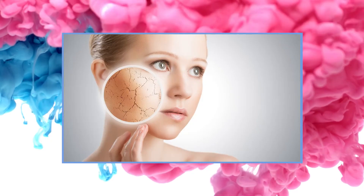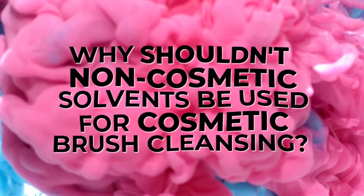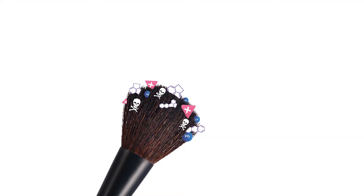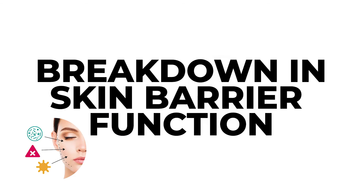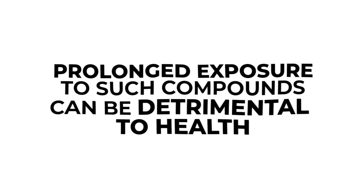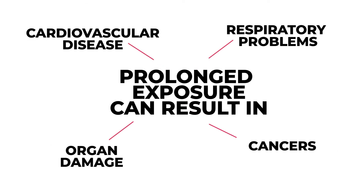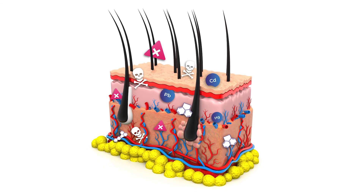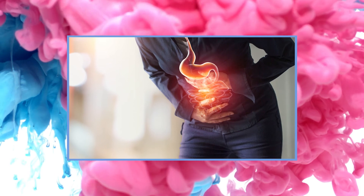They contain toxic compounds which are known to be dangerous to the skin and to general health. When used to clean makeup brushes, the alcohol in the solvent evaporates but leaves behind traces of the toxic elements which are then transferred onto the skin. Research shows denaturants and heavy metals can have a negative effect on the skin, causing a breakdown in skin barrier function, premature aging and free radical damage. Worse still, prolonged exposure to such compounds can be detrimental to health, having been linked to respiratory problems, cancers, organ damage and cardiovascular disease. The residue is absorbed into the skin via the pores and then into the capillary network, where it is absorbed into the bloodstream and ultimately the major organs, where it can pose a serious threat to health.